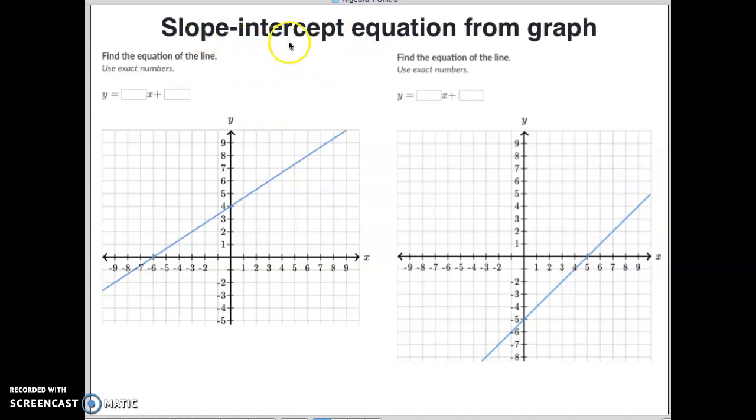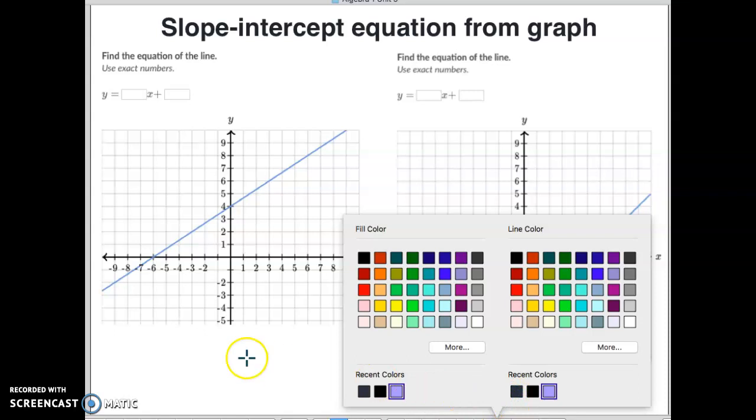So first one called slope-intercept equation from a graph. The first thing we have to do is figure out what is our slope of the line. If you look at this line and we were to create a couple points here, notice how it crosses.